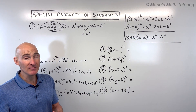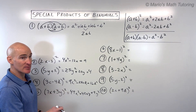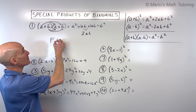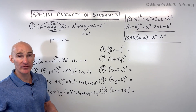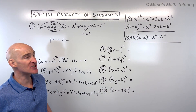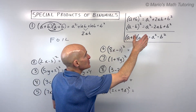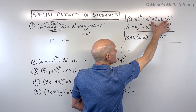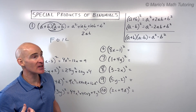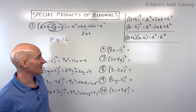You might ask why not just write it twice and do the distributive property, FOIL, or the box method — and you can, those all work. This is designed to be a shortcut. The nice thing about learning this pattern, though, is that eventually we'll be given the expanded form and asked to factor it back — which is doing the process in reverse. If you recognize this pattern, you'll save yourself some heartache later.